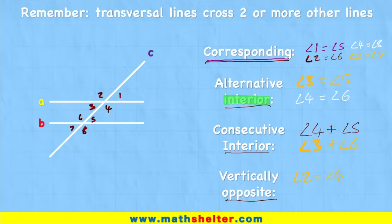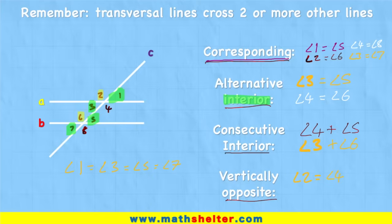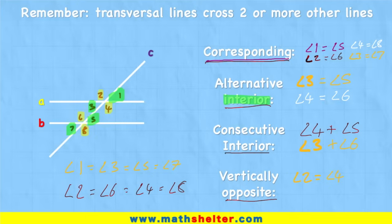So finally, what do we know? The corresponding angles — angle one and angle five are the same. But we also know that the vertically opposite is the same as that, so angle three and angle seven are also the same as angle one and five. So angle one equals angle three, which also equals angle five, and it also equals angle seven. The other corresponding angles — two and six — must also be the same, and because they're vertically opposite to four and eight, they must also equal angle four and angle eight. So there are actually only two different measurements of angle within this whole group of eight angles. Lots of interesting things happening when a transversal line cuts over two parallel lines.